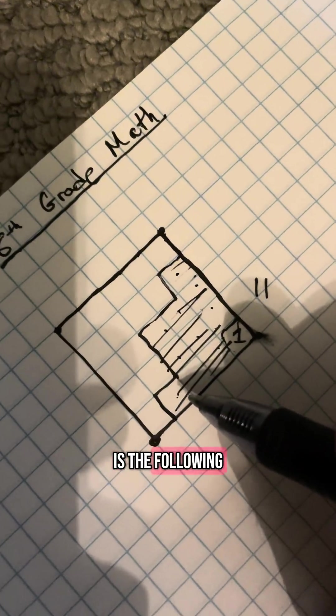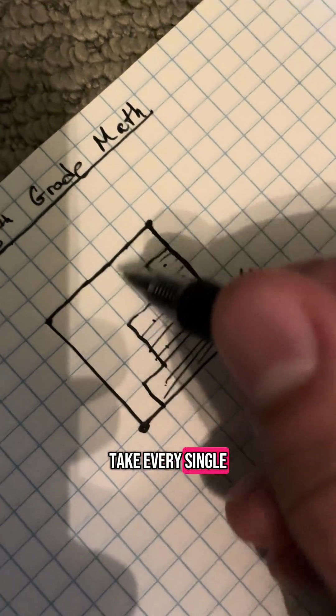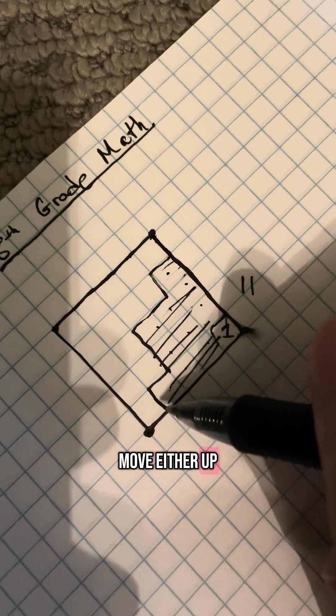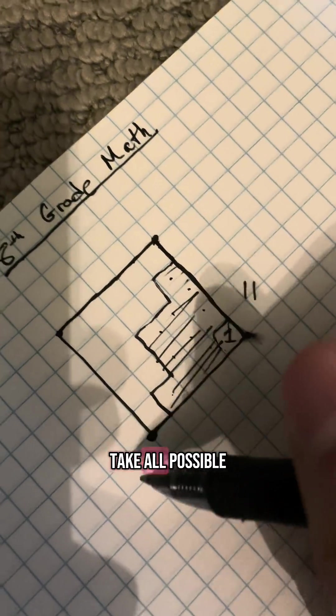Now the problem is the following. Take every single possible path that starts here and ends up here and follows the rules where you move either up right or up left. Take all possible paths,